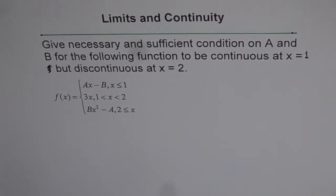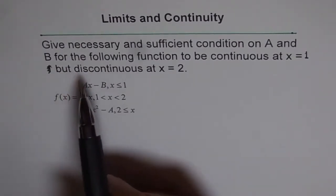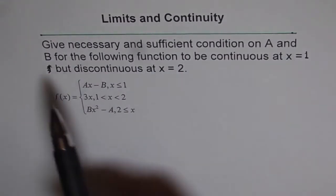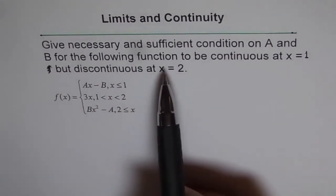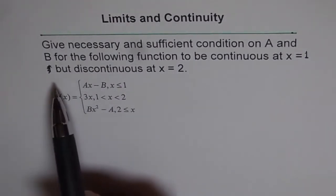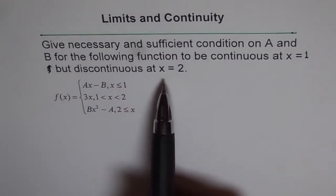Limits and continuity. This is one of the best questions which I have for you. It says, give necessary and sufficient condition on A and B for the following function to be continuous at x equals to 1, but discontinuous at x equals to 2.